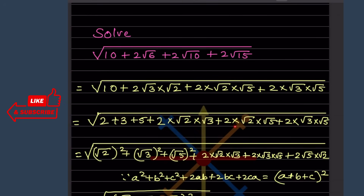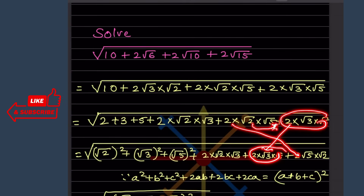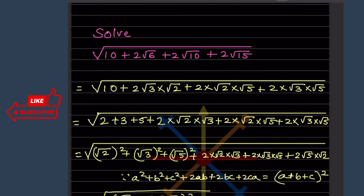Now let us take this first part over here. This will rearrange — √5 will go here and √2 will be here — because we have the formula a² + b² + c² + 2ab, where a is √2 and b is √3.